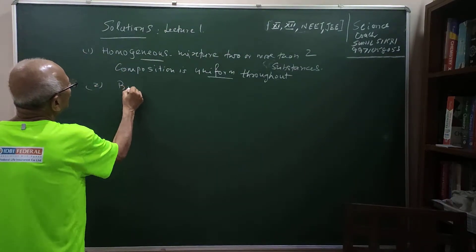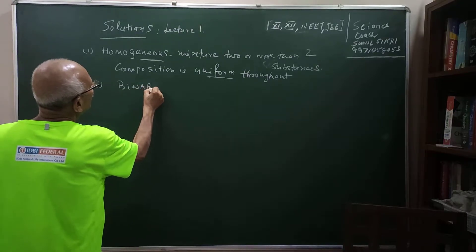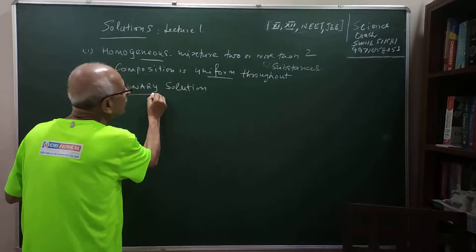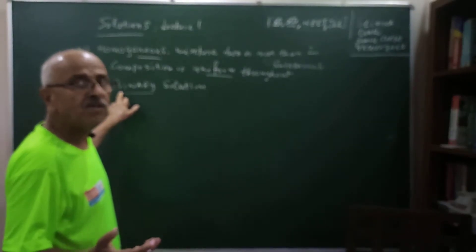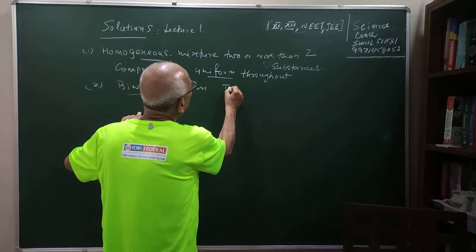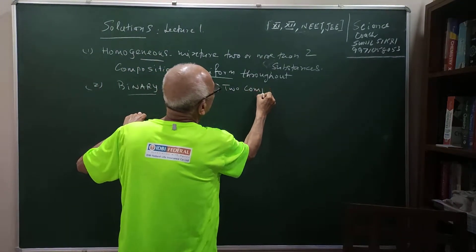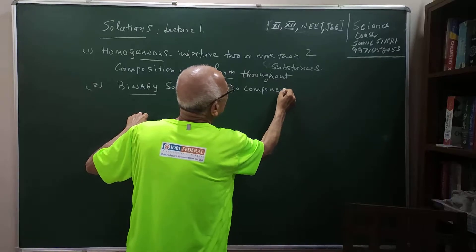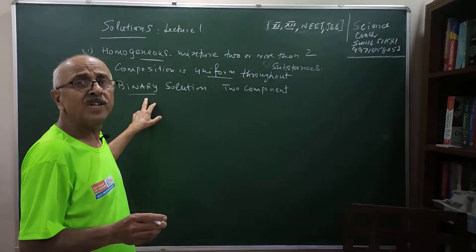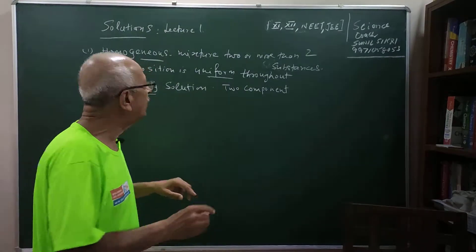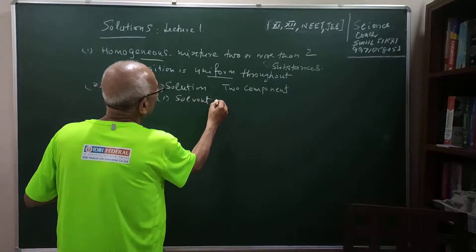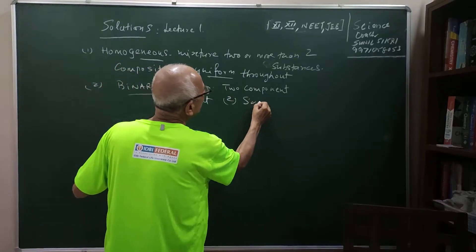In our course we will mostly be interested in binary solutions. When I say binary solution, the prefix 'bi' or 'di' in chemistry means two components. So in a binary solution there are two components — the component can be solid, liquid, or gas. We use the terms solvent and solute.